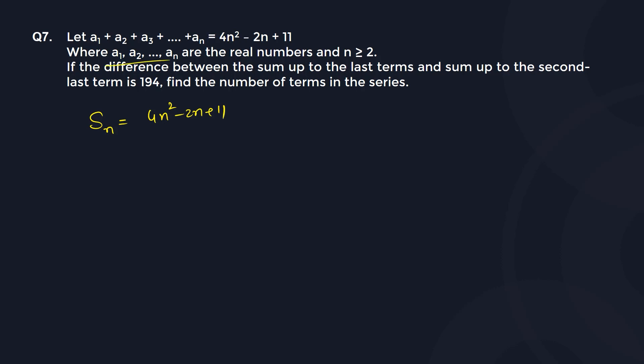All these are real numbers and n is greater than or equal to 2. The problem says: if the difference between the sum up to the last term and the sum up to the second last term — that is, Sn minus Sn-1 — is given as 194.